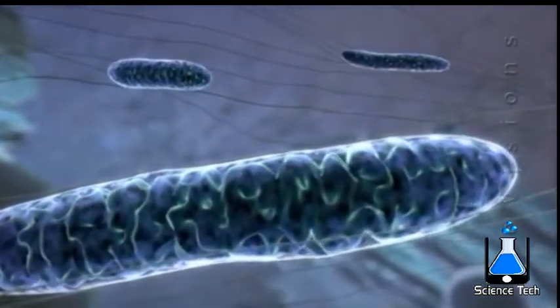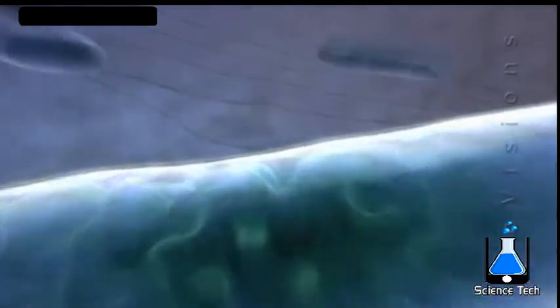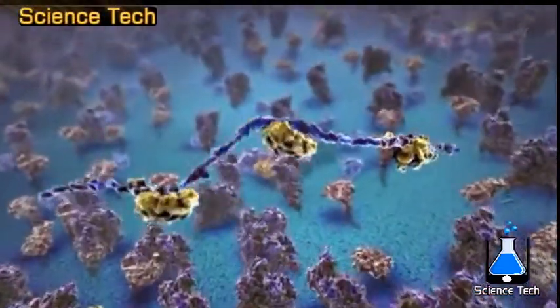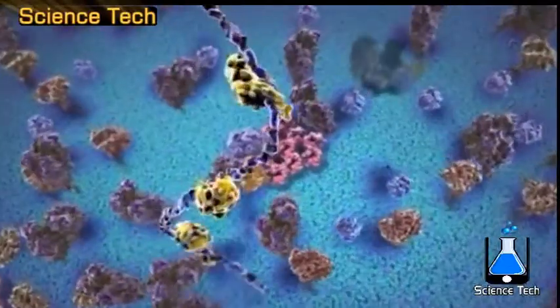Most mitochondrial proteins are transported from the cytosol into mitochondria through specialized protein translocator complexes. Interactions between these complexes bring the outer and inner mitochondrial membranes into close proximity.